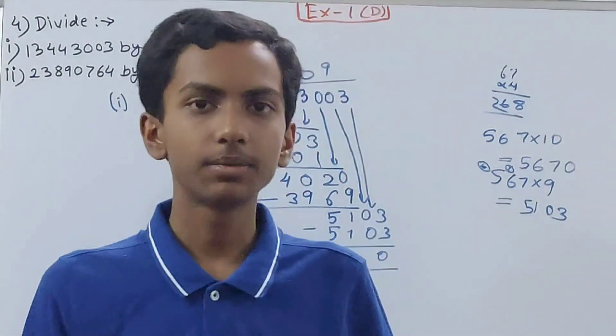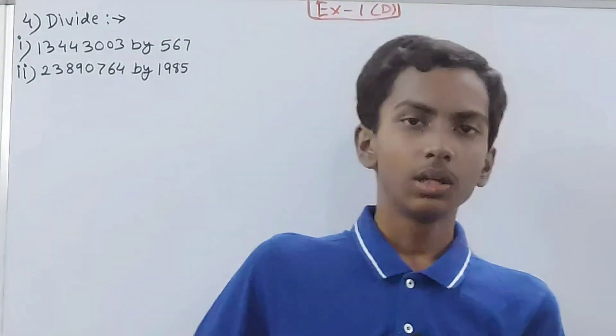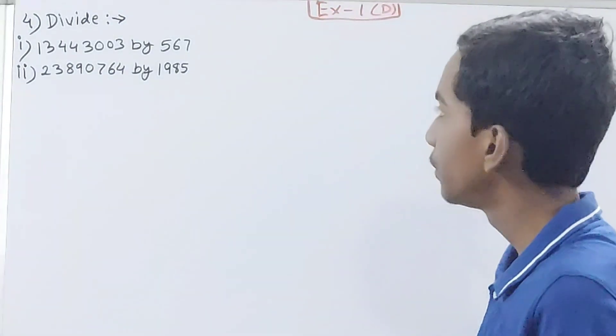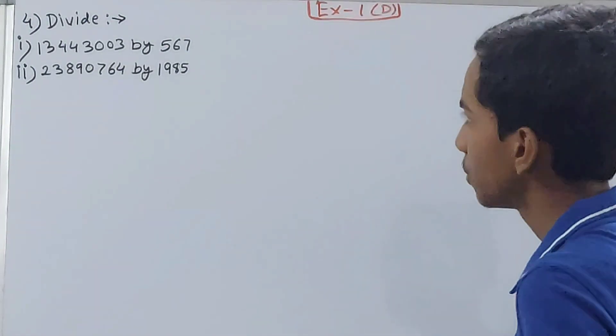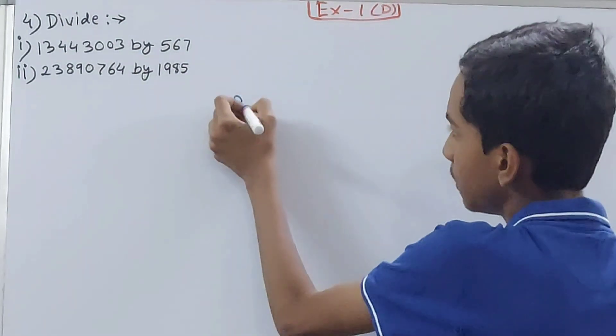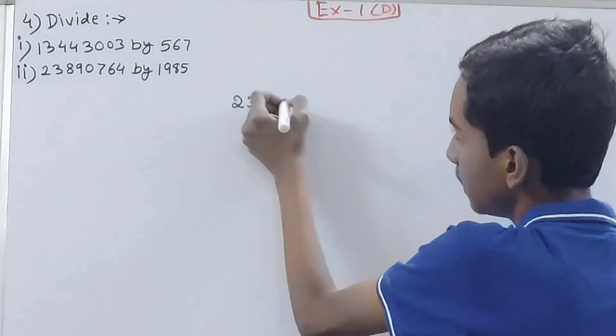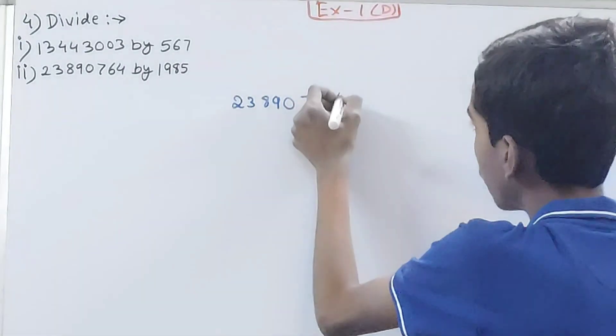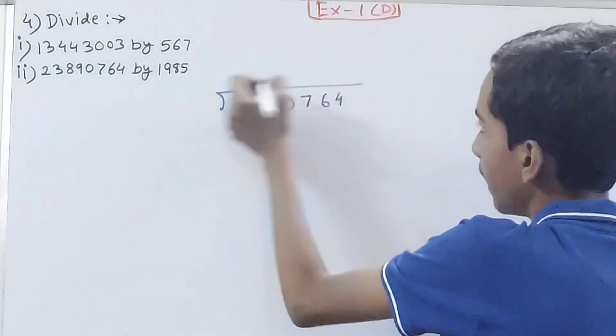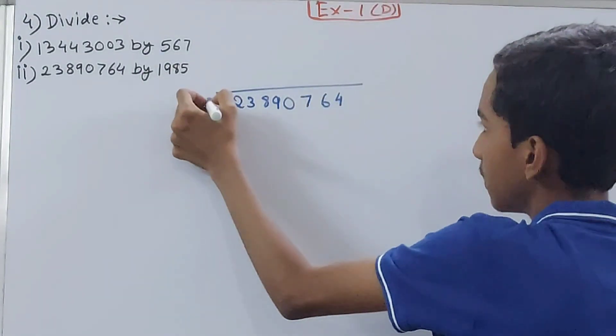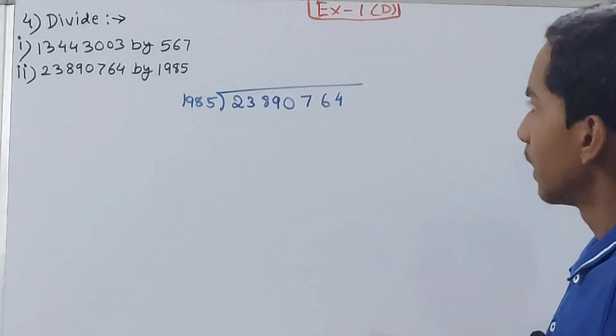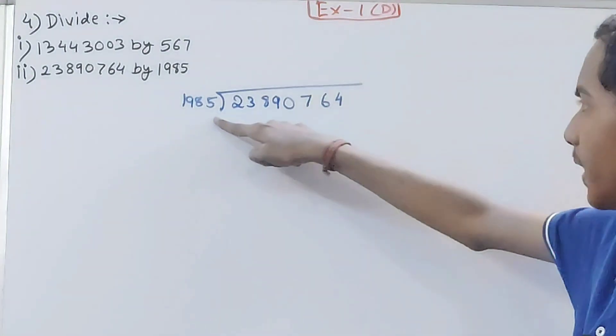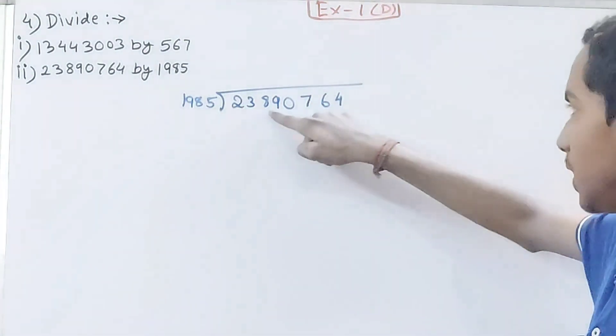Let's move on to the next part. The next part, this is 23890764 by 1985. Same thing here, 23890764 divided by 1985. Same way we will do this also.